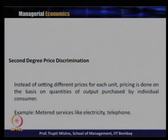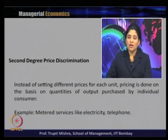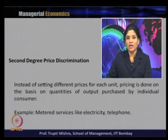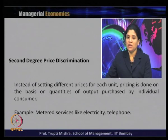In second degree price discrimination, instead of setting different prices for each unit, pricing is done on the basis of the quantities of output purchased by the individual consumer. The discrimination is not on the basis of price but on the basis of quantity. A typical example of second degree price discrimination is metered services like electricity and telephone.